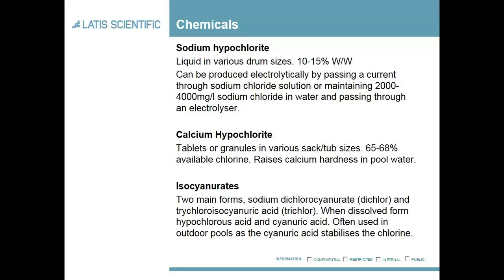Isocyanurates come in two forms. When dissolved in water they form hypochlorous acid and cyanuric acid, and generally these tend to be in solid forms or chemicals. High light coming through onto them can slightly degrade the chlorine, and the cyanuric acid will stabilize it, so you minimize the breakdown.